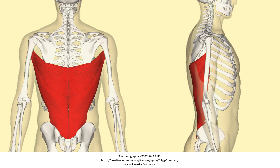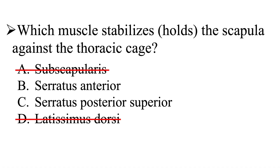Although a few of the latissimus dorsi's muscle fibers attach to the inferior angle of the scapula, this muscle is still not responsible for stabilizing the scapula to the thoracic cage. So D, the latissimus dorsi, is also not the correct answer.